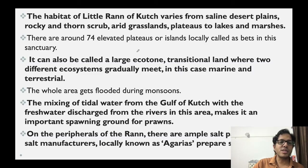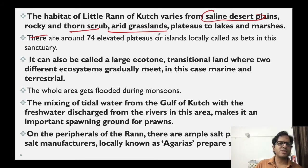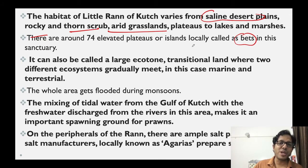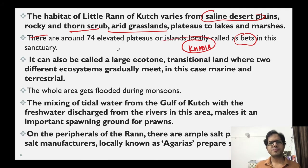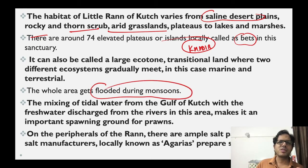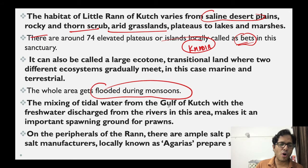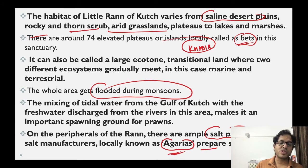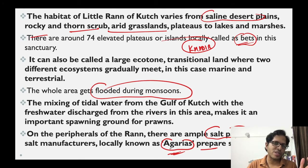Run of Kutch has saline desert plains, rocky and thorn scrub, arid grasslands, and marshy areas. The islands - the raised areas - are called 'bets'. The entire area gets flooded during monsoons, and during the dry season these bets come up and resurface. Around Run of Kutch there are many salt pans. The local tribals called Agadiyas prepare salt here. They are the local salt manufacturers of Run of Kutch.